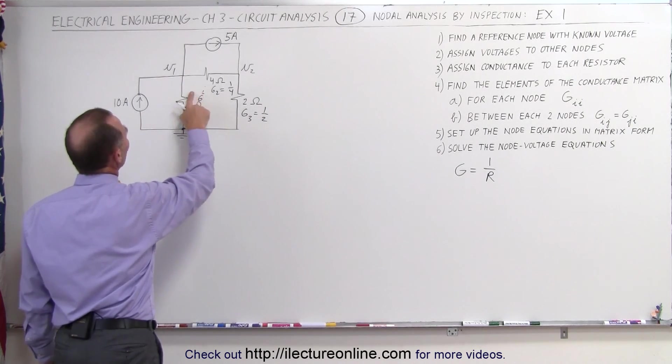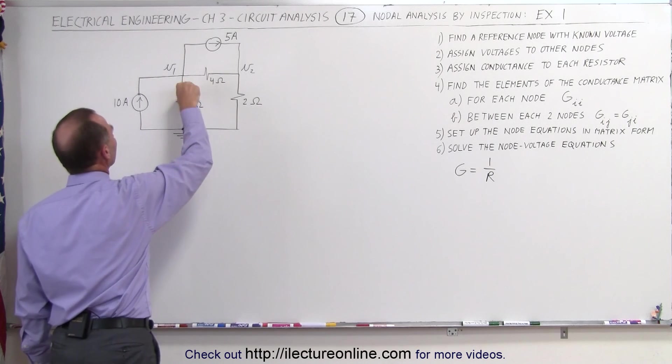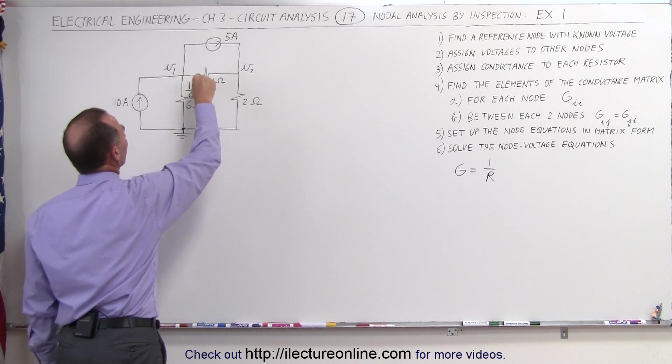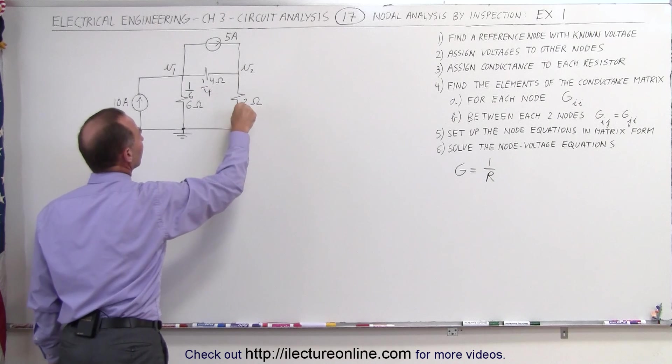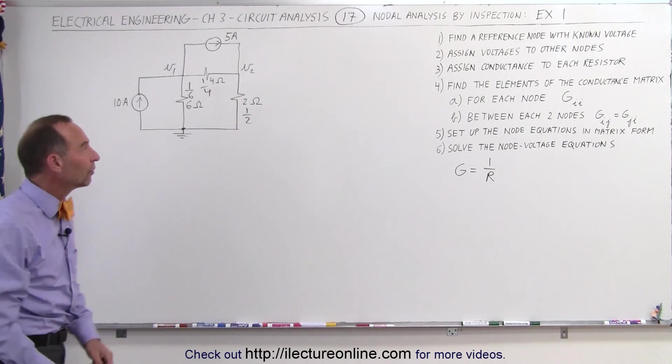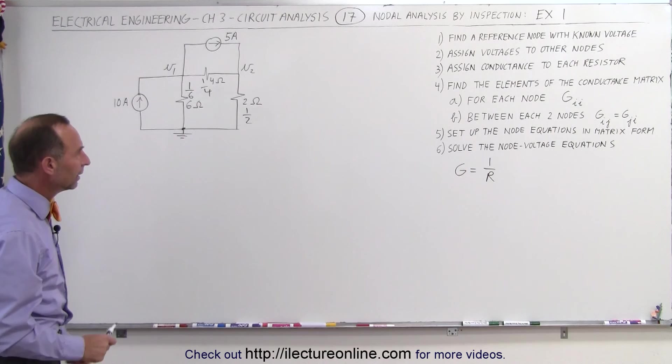Maybe to keep it a little bit cleaner, let's just write the conductance is 1/6, the conductance here is 1/4, the conductance here is 1/2. So those are the conductances of the three resistors.